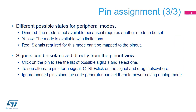There are different possible states for peripheral modes. Dimmed: the mode is not available because it requires another mode to be set — place the mouse pointer over the dimmed mode to see the reason, as it may require a disabled clock source or may have other peripheral dependencies. Yellow: the mode is available with limitations because some options are blocked by conflicts — for example, the USART may not be configured to synchronous mode because all the selectable clock pins are taken. Red: signals required for this mode cannot be mapped to the pinout, which may occur if a crucial signal has all its alternate pins used by other peripherals.